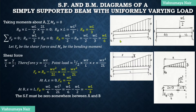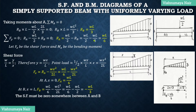Now let's consider the equilibrium of forces. Summation Fy equals 0. Therefore, Ra minus wL/2 plus Rb equals 0. Therefore, Ra equals wL/2 minus Rb, which equals wL/2 minus wL/3, which gives Ra equal to wL/6.